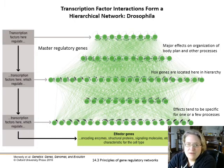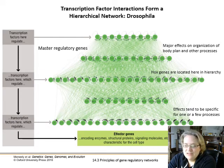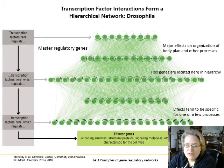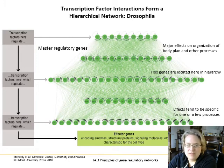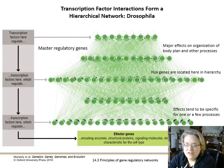You end up having these tiers of transcription factors, starting with master regulatory genes that trickle down to lower levels. The further away you are from the effector genes, the more broad and general the response; the closer you are to the effector genes, the more immediate the reaction needed. Up top you have major effects on the organization of body plan — like the Hox genes — but lower down the hierarchy you just have effects on one or two specific processes when triggered.